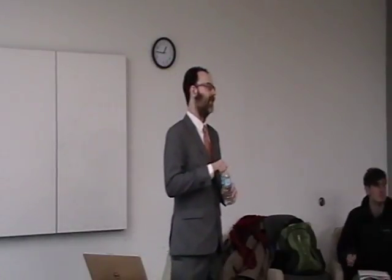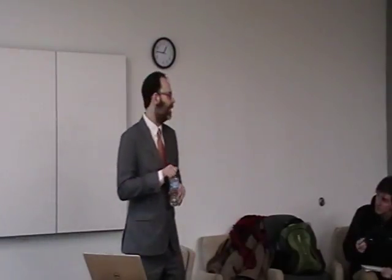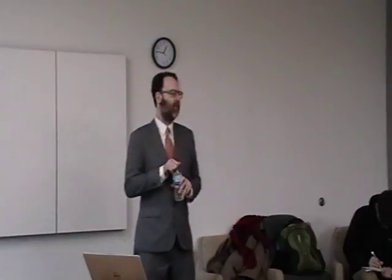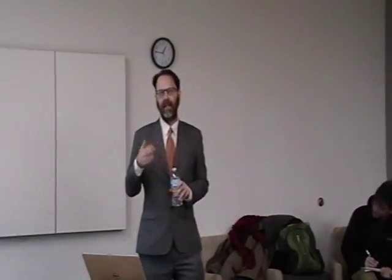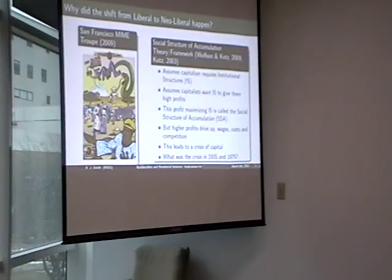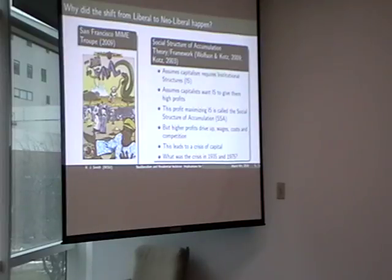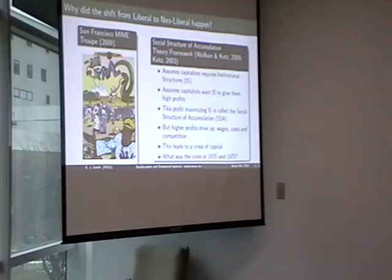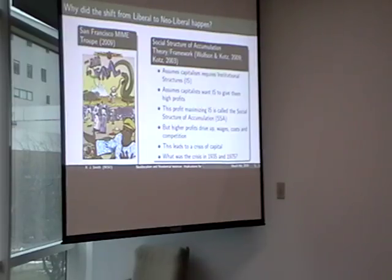Why do we have these shifts? There's a theory in sociology and alternative economics called the social structure of accumulation. Maybe it's more of a framework, but the intuition behind it is clear. The idea is that in order for a capitalist market economy to work, you need some kind of institutional structure — whether that's courts, regulations, a tax structure. In this theory, capitalists want the institutional structure to guarantee them high profits; they want the institutions to work for them. That profit-maximizing institutional structure is called the social structure of accumulation — meaning the accumulation to holders of capital, or the investor class.